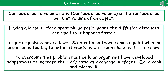Large organisms have a lower surface area to volume ratio, so we get to a point when an organism is too big to get everything it needs by diffusion alone, as diffusion would be too slow. To overcome this problem, multicellular organisms have developed adaptations to increase the surface area to volume ratio at those exchange surfaces, like the alveoli and microvilli.